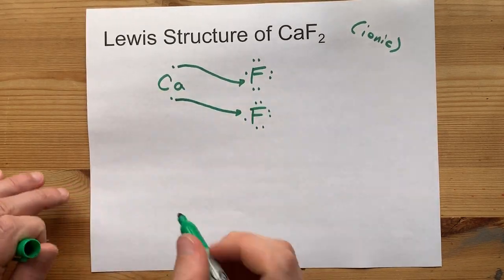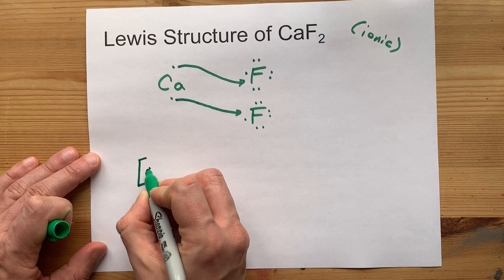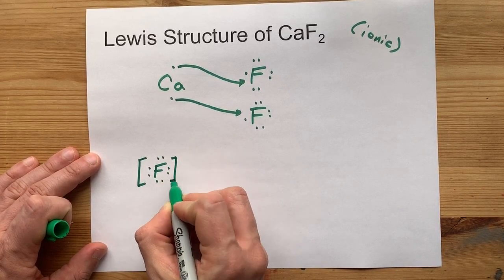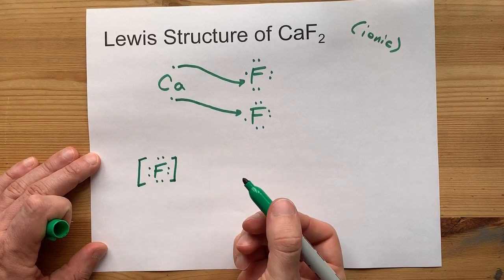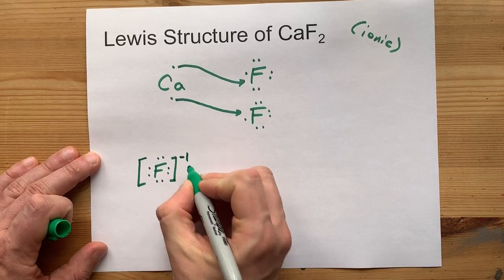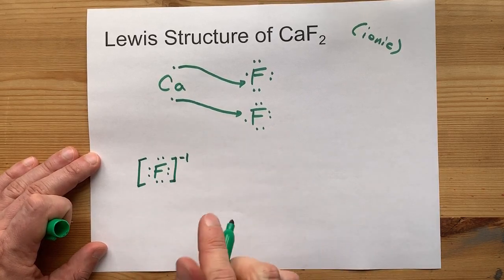This is how it happens. Let's draw the actual Lewis structure. Let's draw the F with eight dots around it. Now, eight electrons in its outer shell is one more than it brought. That gives it a charge of minus one. Great.